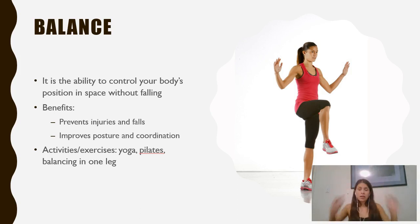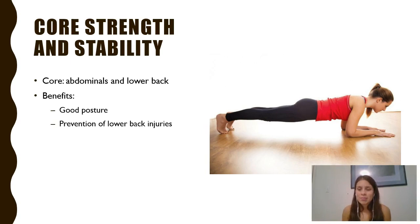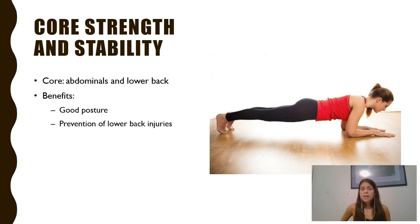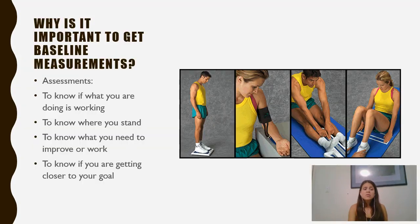Core strength and stability — your core is made up of your front abdominals and your lower back. Core strength is beneficial for your posture and prevention of low back injuries. A great core exercise is the plank, which works both your lower back and front abdominals and helps with posture. Those are the five components of a physically fit body.